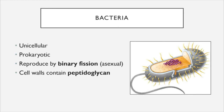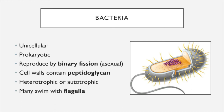Bacteria have cell walls, which are layers external to the cell membrane responsible for protecting the bacteria, and these cell walls are composed of a substance called peptidoglycan. Peptidoglycan is important as a way to identify different types of bacteria, as well as a target for treating certain bacterial infections. Bacteria may be heterotrophic or autotrophic. Many bacteria are motile — capable of moving throughout their environment — and many do so using an appendage called a flagellum, plural flagella.